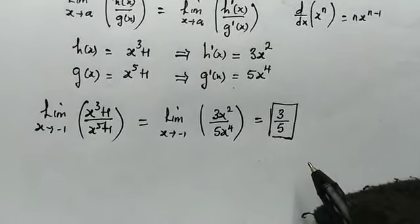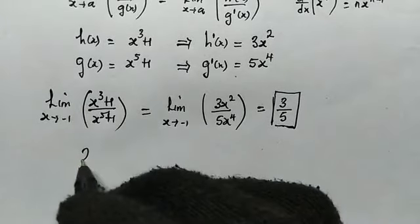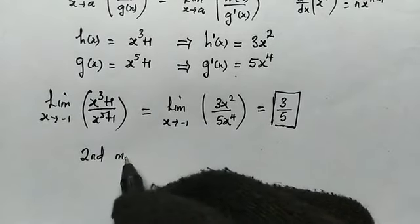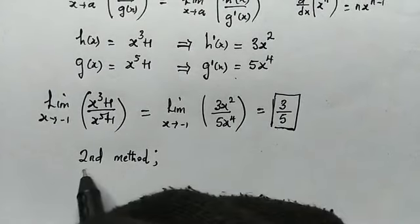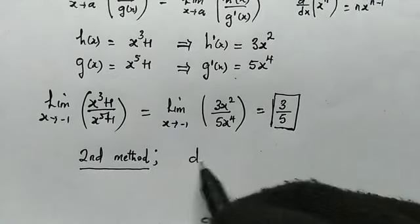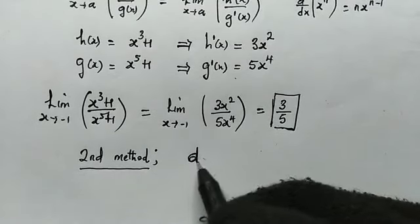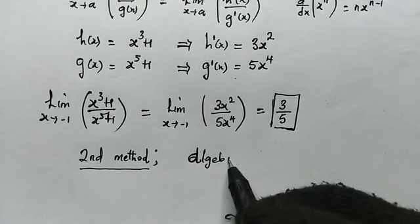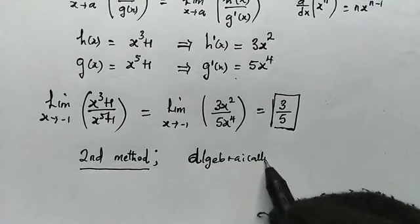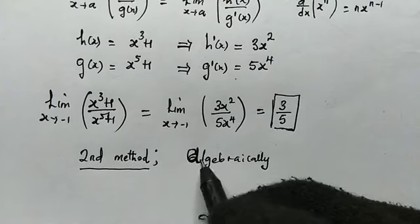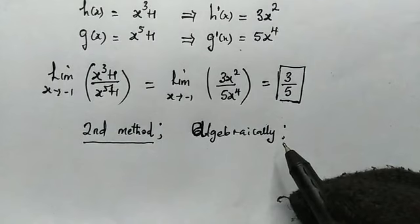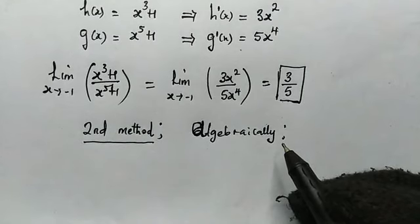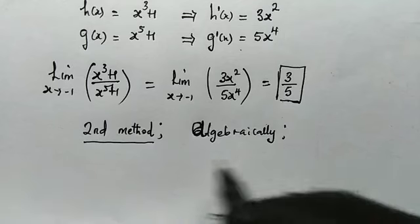So this limit is exactly equal to 3 over 5. Now for our second method, we are going to solve this algebraically — let's find a way to simplify the given function.